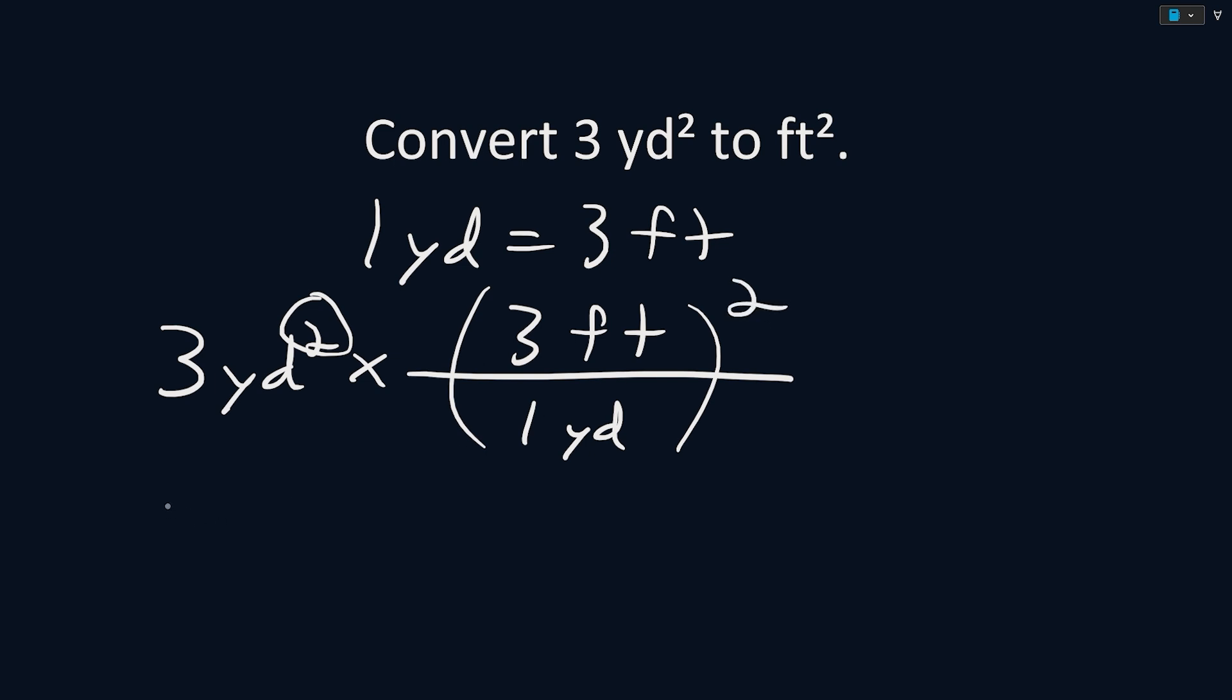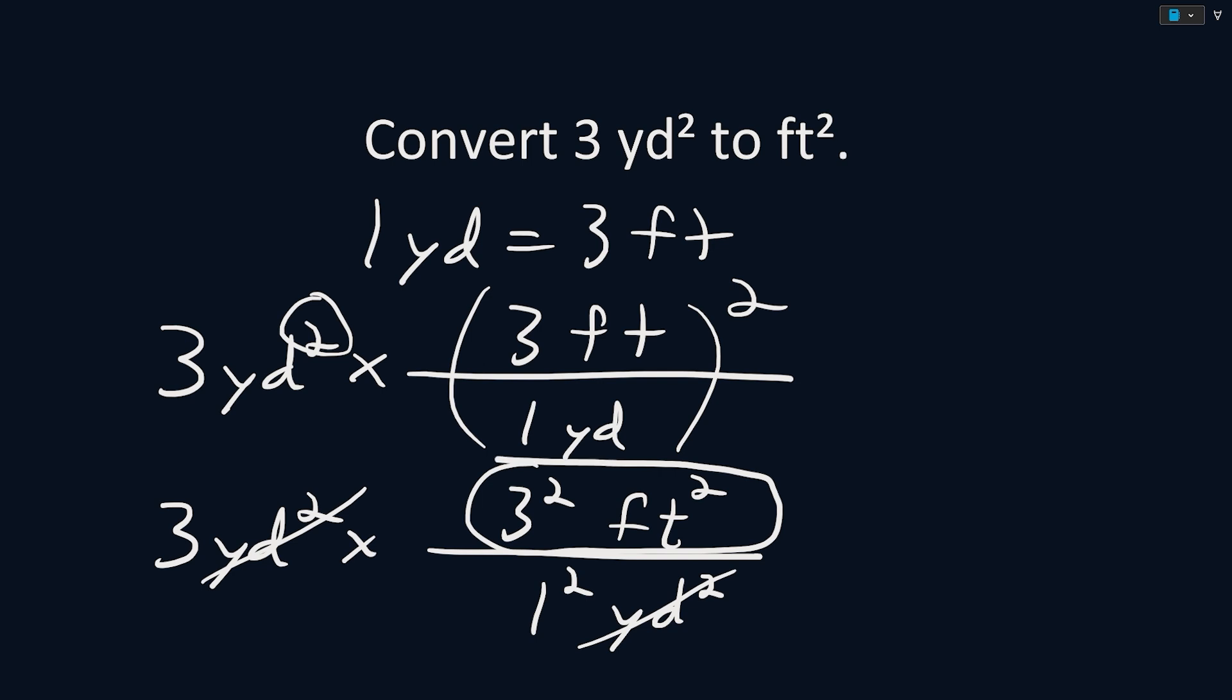This is equivalent to saying three yards squared times a conversion factor of three feet squared over one yard squared. Multiplying through this, we see that the yards squared cancel and leave us with three squared square feet.